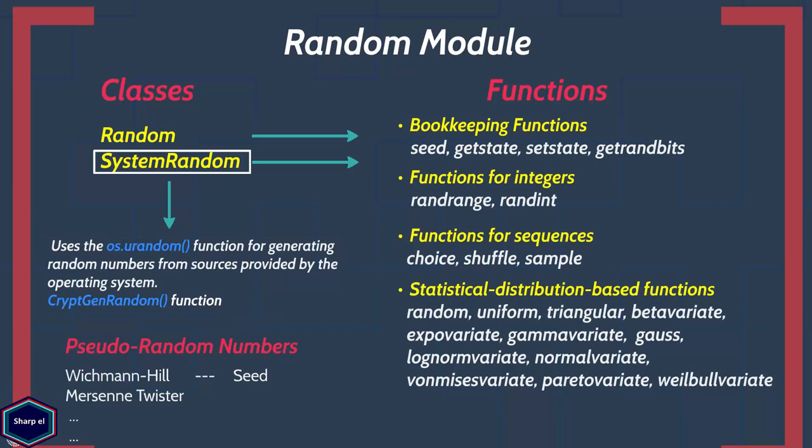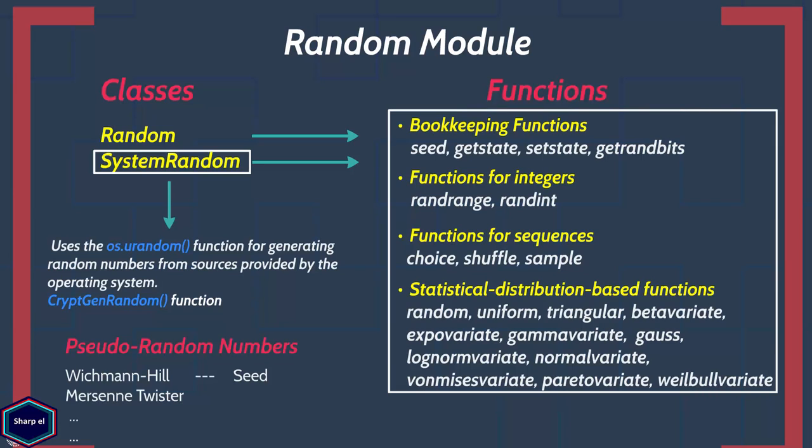In a nutshell, the SystemRandom class is very similar to the random class and it supports nearly all functions. But the random numbers generated by SystemRandom are not easy to reproduce, and they can be used for cryptographic purposes.